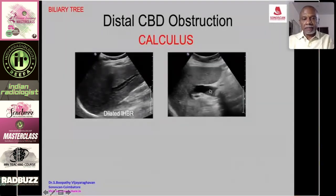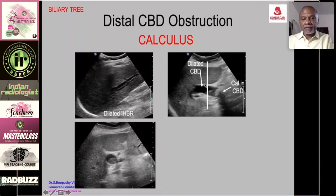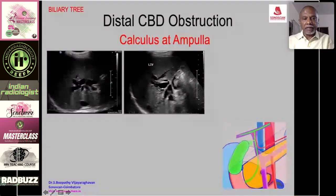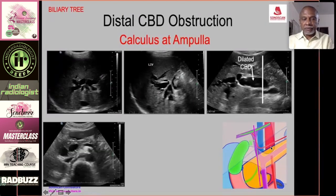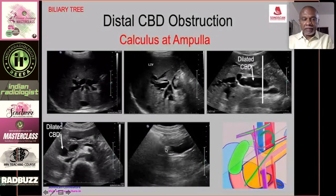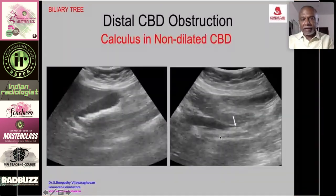Distal CBD obstruction causes: dilated intrahepatic radicals and dilated common bile duct with a calculus in the distal CBD. On transverse section through the head of pancreas, the dilated duct is seen with the calculus in the distal duct. The calculus may also be impacted at the ampulla — seen on the rotated transverse section as a calculus impacted within the ampulla surrounded by gas-filled duodenum.